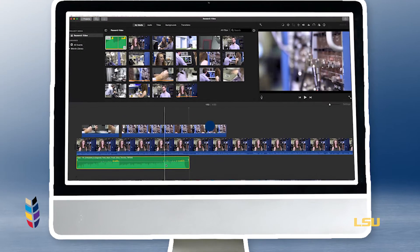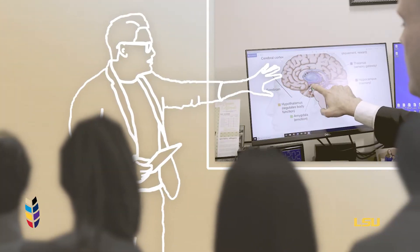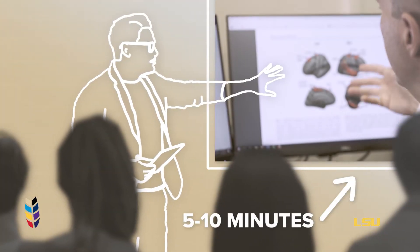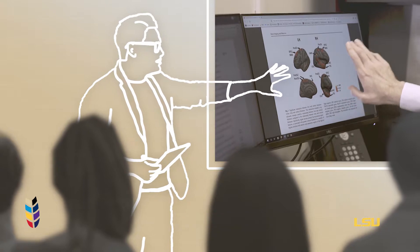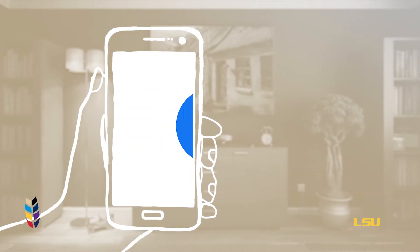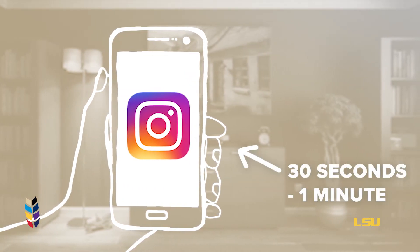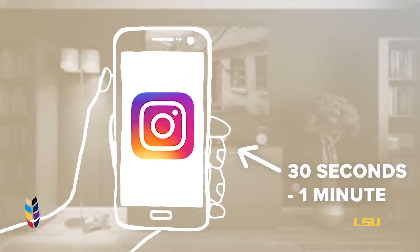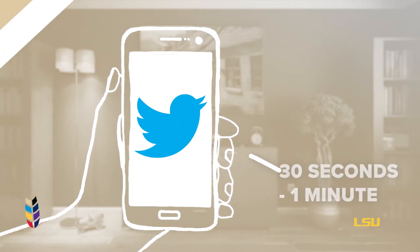Next, we want to decide where this video will be shown and how long it will be. Some good average lengths are five to ten minutes for a conference, meeting, or class setting; two to four minutes for Facebook; or a 30-second to one minute for a quick teaser on Instagram or Twitter. Remember, longer is not always better — a shorter, more impactful video engages with the audience much better.